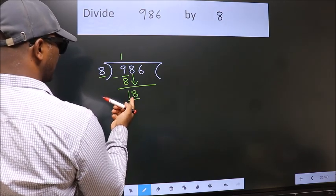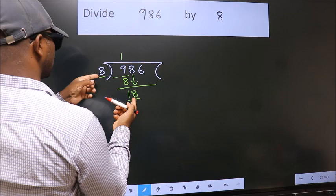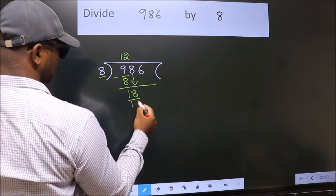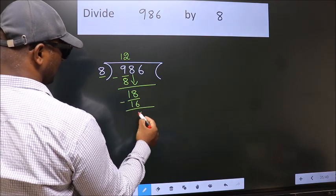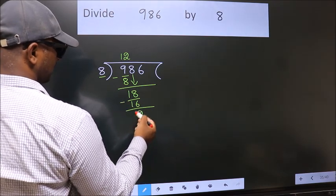A number close to 18 in the 8 table is 8 times 2, which is 16. Now we subtract. We get 2. After this,